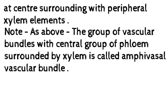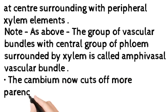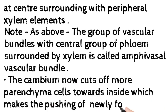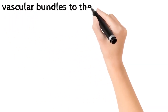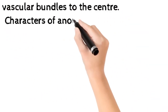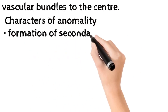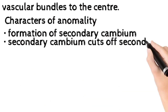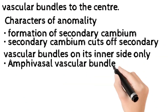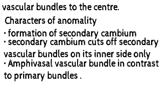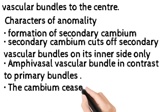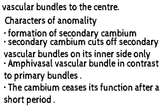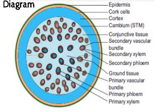The group of vascular bundles with a central group of phloem surrounded by xylem is called an amphibasal vascular bundle. The cambium then cuts off more parenchyma cells towards the inside, pushing the newly formed vascular bundles toward the center. Characters of abnormality: secondary cambium cuts off secondary vascular bundles on its inner side only, forming amphibasal vascular bundles in contrast to primary bundles, and the cambium ceases its function after a short period.